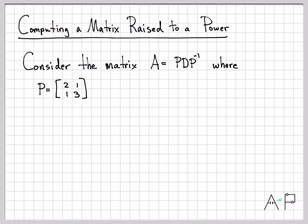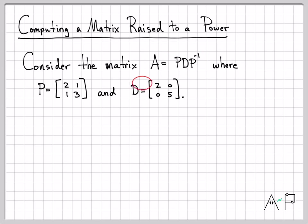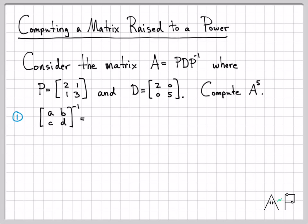We're told that P is equal to [2, 1; 1, 3], so it's a 2 by 2 matrix. D is a diagonal matrix — any time you work with this kind of diagonal representation, D is always a diagonal matrix, and that's why we call it D for diagonal. If we multiply P, D, and P inverse out, we can figure out what A is. What we'd like to know is what A to the fifth is — A times itself five times. So as a first step, let's compute P inverse and figure out what A is.